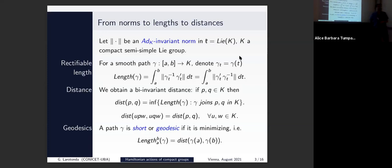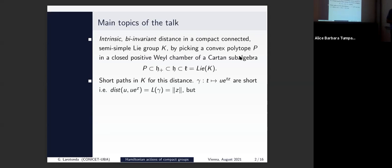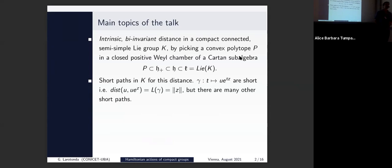We know how to characterize some short paths for this distance. Just as in the case of a linear space where the segment was always one possibility, one-parameter groups are always short for this bi-invariant metric. The condition is that you start with a norm which is invariant under the adjoint action of the group. This theory has some years now and is valid in fact for any Banach space — it doesn't depend on dimension. But as I showed, there could be many other short paths.